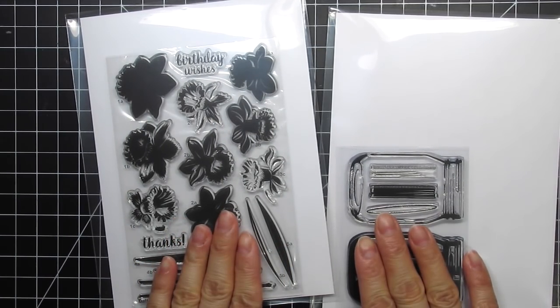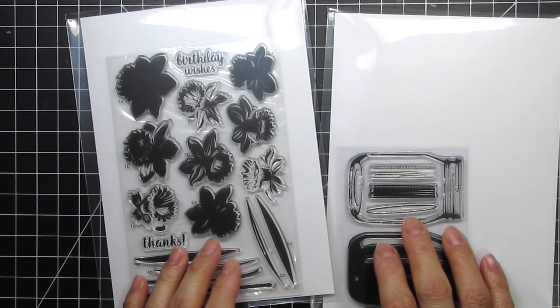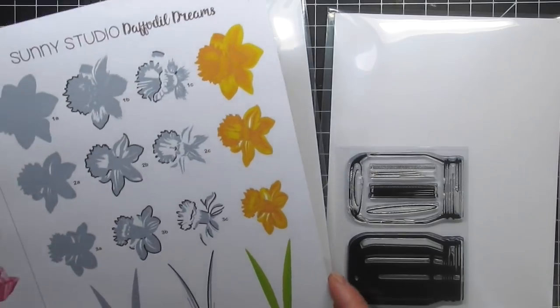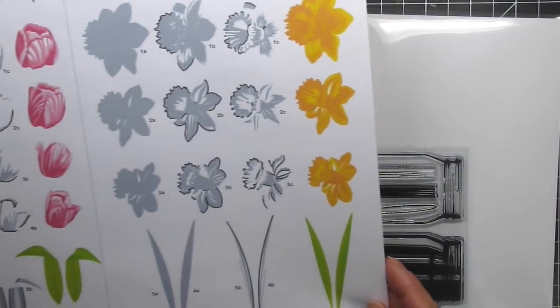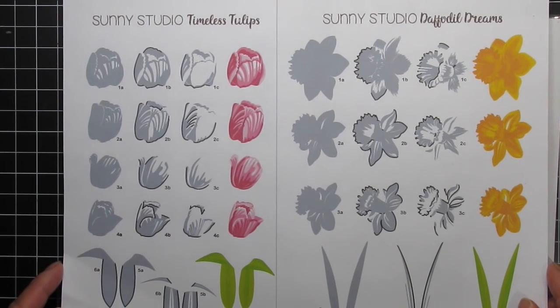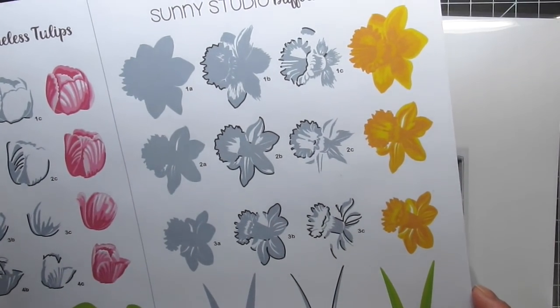The Daffodil Dreams set is absolutely stunning and includes three different shapes and sizes of daffodils. Each version has three layers meant to be used with three shades of a single color. That way, if you're not a colorer or for those times you don't want to color, all you need to do is stamp all those layers together. The two stems are a single layer and the two leaves are two layers each. Mendy has created an amazing stamp guide and you can download it for free from the store website. The Daffodil Dreams stamp guide is on the same sheet as the Timeless Tulips stamp guide.